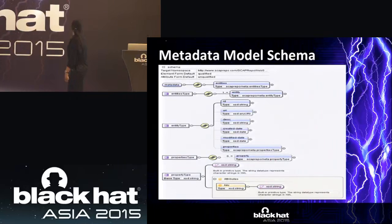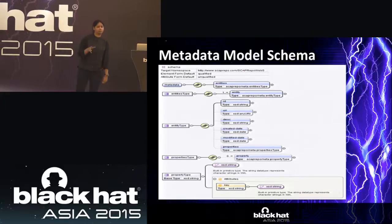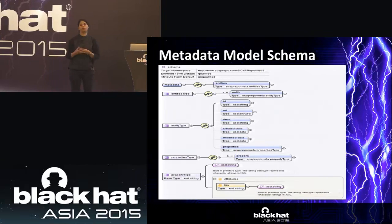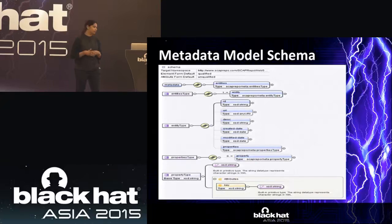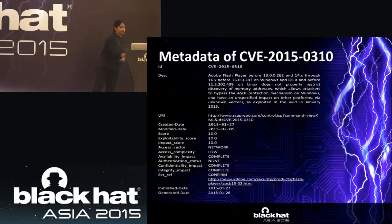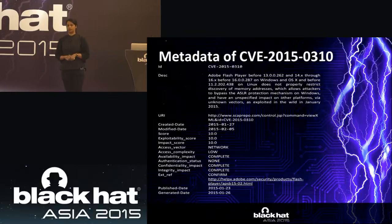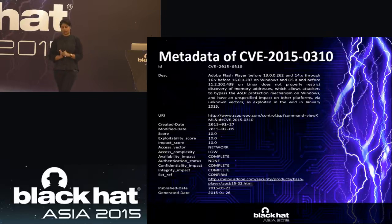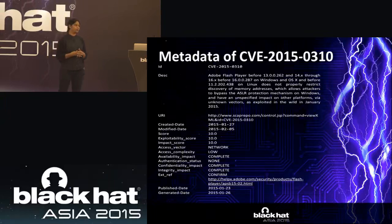I'll quickly go through this. The metadata stores ID, description, and date — if I want to run queries on date. There are properties stored as key-value pairs: every CVE has some properties, OVAL has some properties. Here is an example of CVE metadata — we have the ID, description, created and modified dates, an important score field (10.0 in this case), access vector, and impact vector. This data is publicly available and we store it in a metadata format.